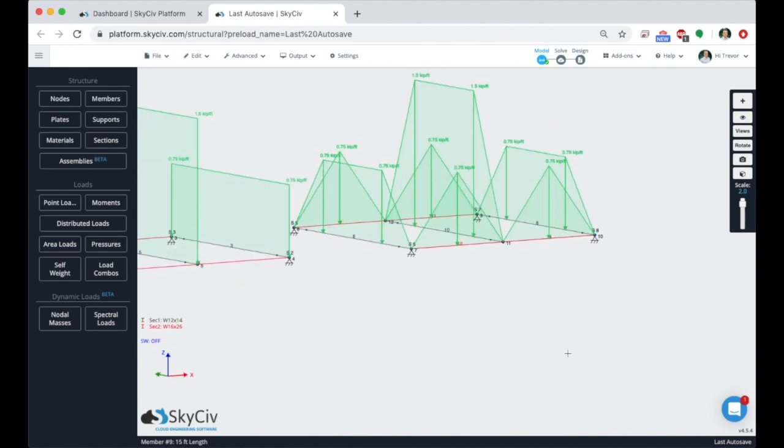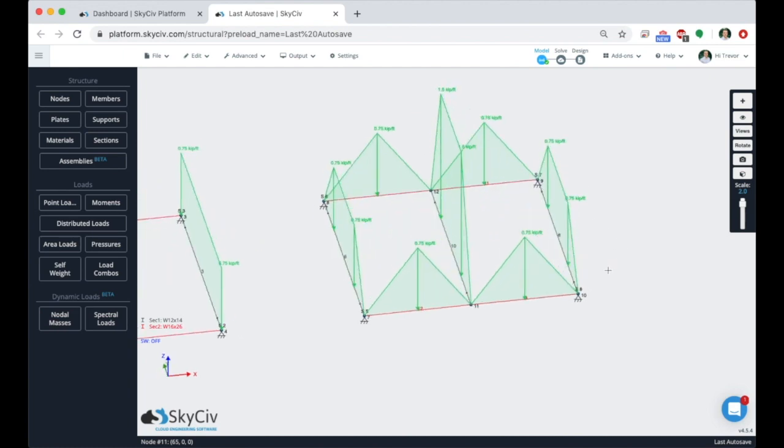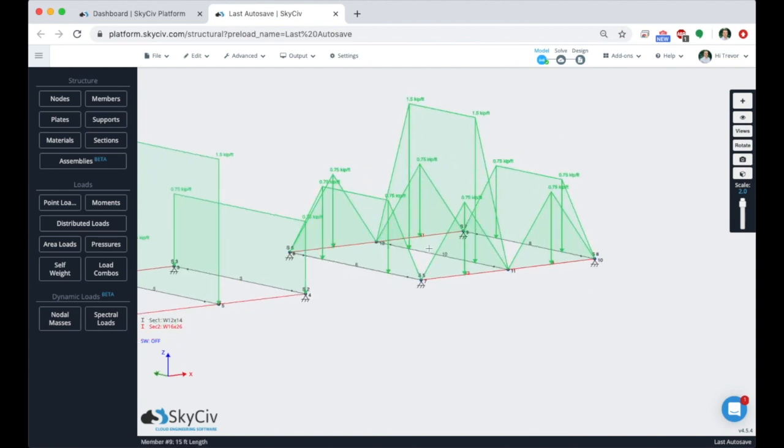And then since the middle member is taking two sides of that, it's seeing kind of an amplified version of that where if you take basically this trapezoidal load where it goes up to 0.75 feet across and then down to zero and multiply that by two, that is what this middle member is seeing.